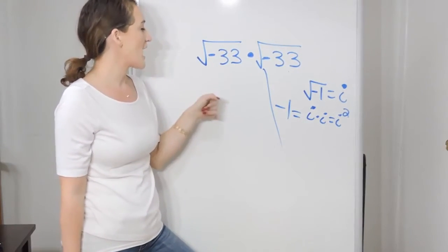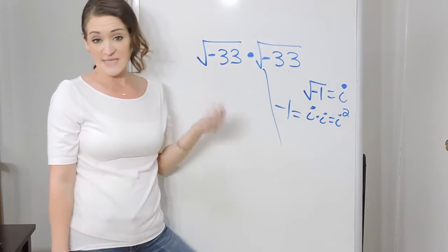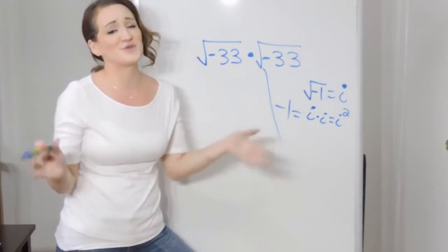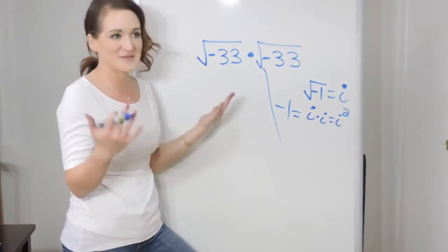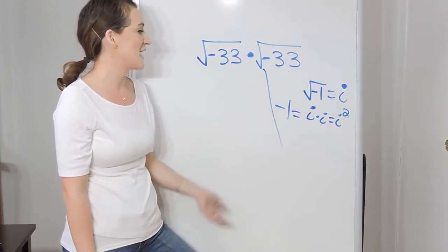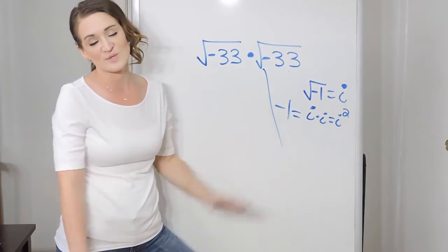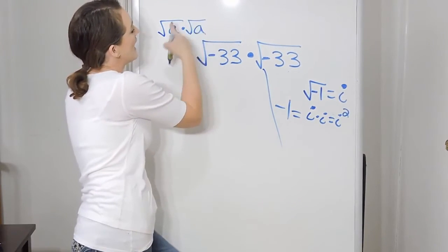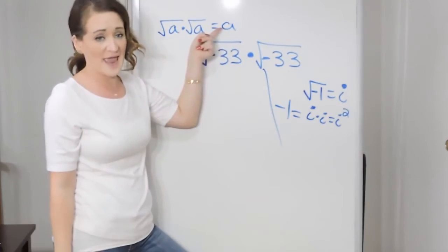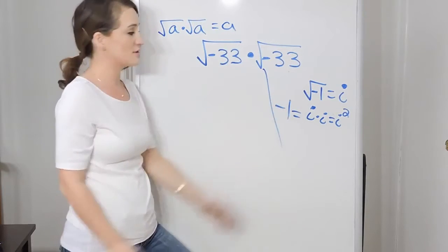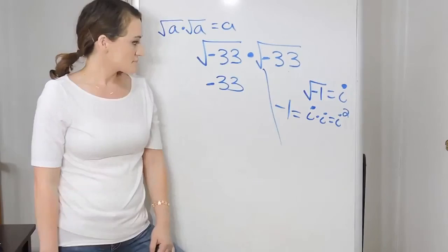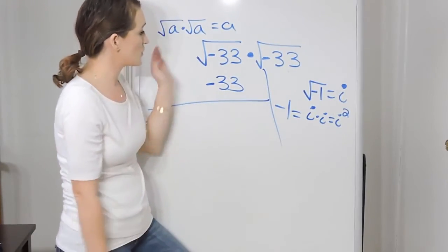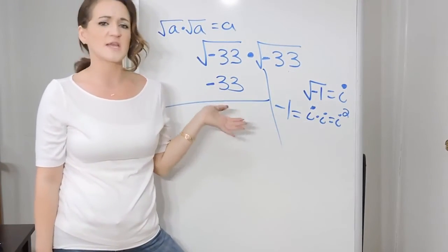Taking a look at what we have here: the square root of negative 33 times the square root of negative 33. There is actually a third rule — a radical times itself is equal to its radicand. So square root of negative 33 times square root of negative 33 equals negative 33. And this would actually be our final answer. This is the quickest, shortest, and easiest way to get to the solution for this problem.